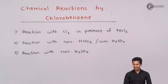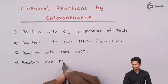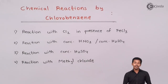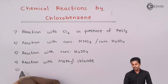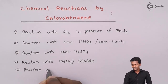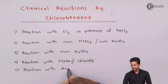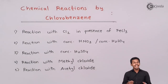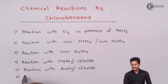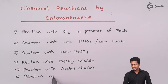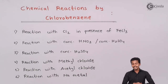Then there is the reaction with concentrated H2SO4. After that, reaction with methyl chloride — we are going to talk about Friedel-Crafts reaction, which includes Friedel-Crafts acylation also, so chlorobenzene can also react with acetyl chloride. Finally, we are going to talk about the reaction of chlorobenzene with sodium metal. So let us understand each of these reactions one by one.